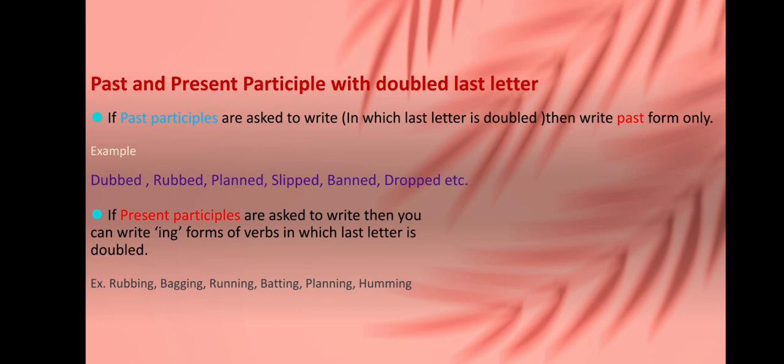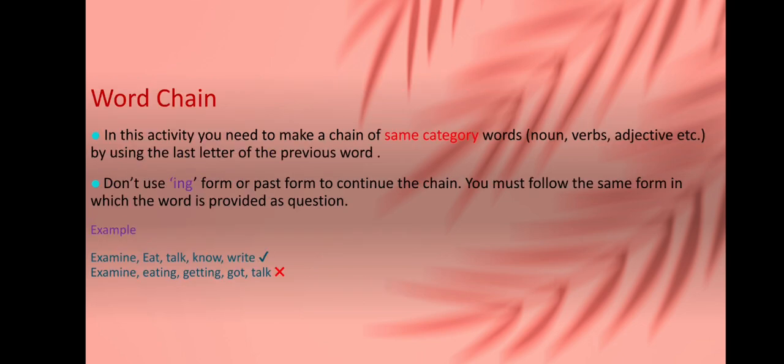Now next, word chain. This is a very popular activity and you need to make a chain of some same category words like nouns, verbs, or adjectives, etc., by using the last letter of the previous word. Last letter means last alphabet of the previous word. Do not use -ing form or the past form to continue the chain. You must follow the same form in which the word is provided as question.